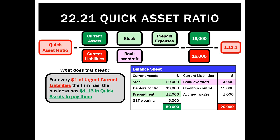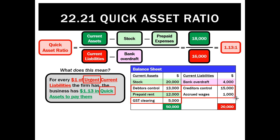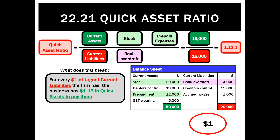So what does 1.13 to 1 mean? It means for every dollar of urgent current liabilities — so creditors control and accrued wages in this case — the firm has $1.13 in quick assets to pay them. We use the term quick assets, not current assets. Quick assets would only be debtors, GST receivable from the government (since we have a legal right to it within 90 days), and cash. We also say urgent current liabilities — not all current liabilities — just the urgent ones, excluding the bank overdraft.